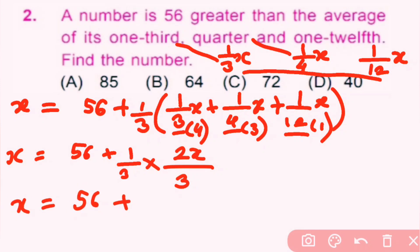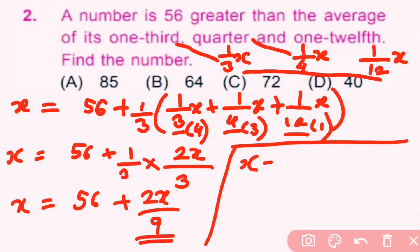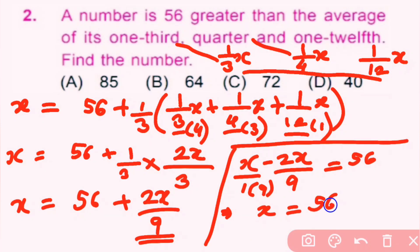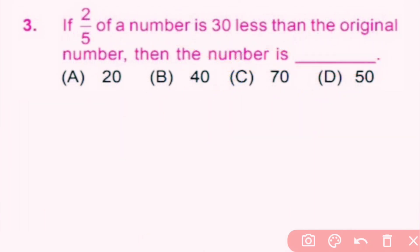So x equals 56 plus 2x/9. Taking 2x/9 to this side: x minus 2x/9 equals 56. Making the denominator the same by multiplying x by 9: (9x minus 2x)/9 equals 56, so 7x/9 equals 56. Thus x equals 56 times 9 by 7, and since 7 eights are 56 and 8 nines are 72, x equals 72. Answer c is correct.